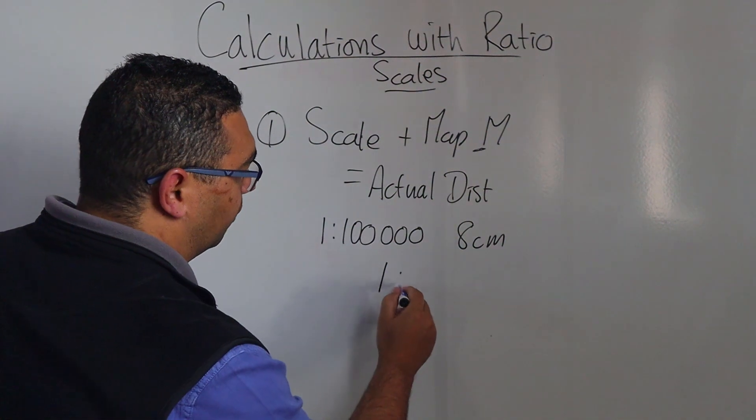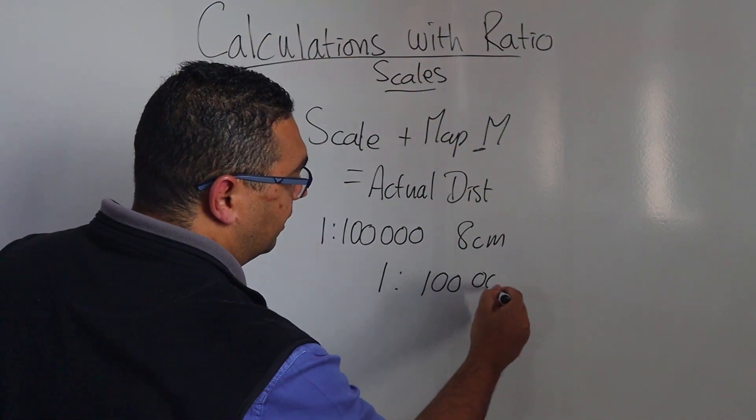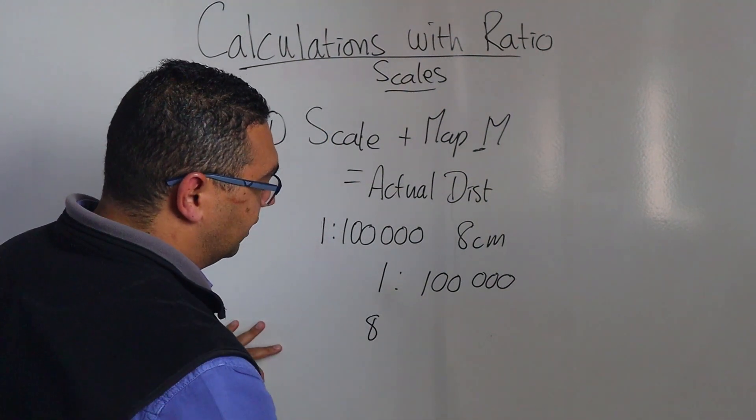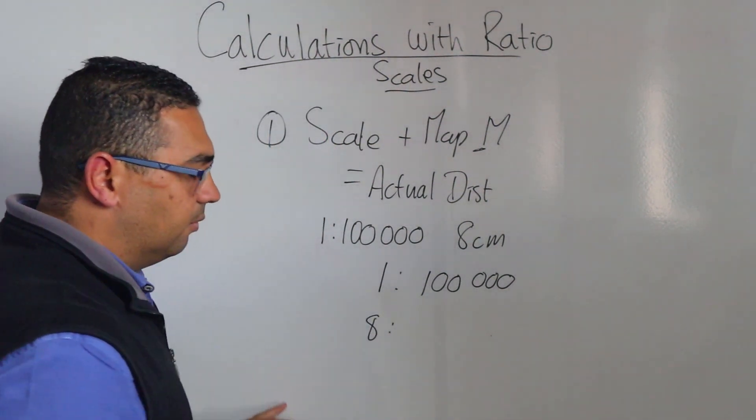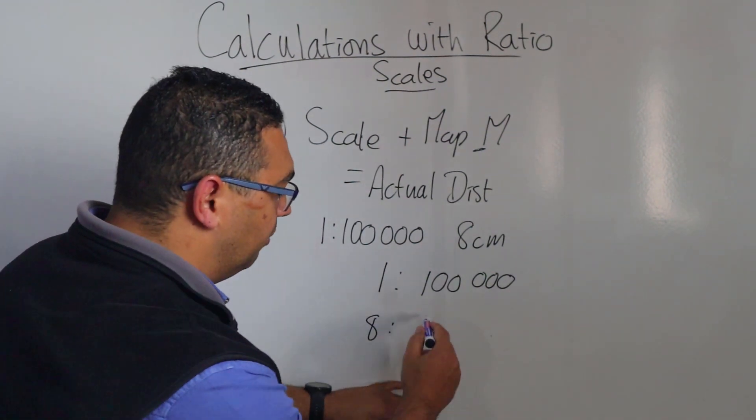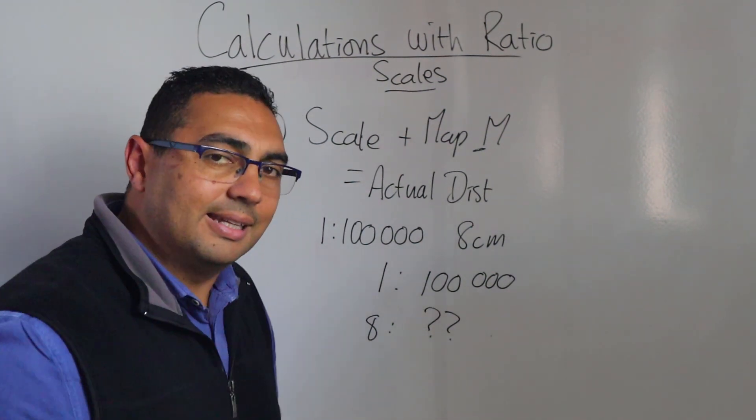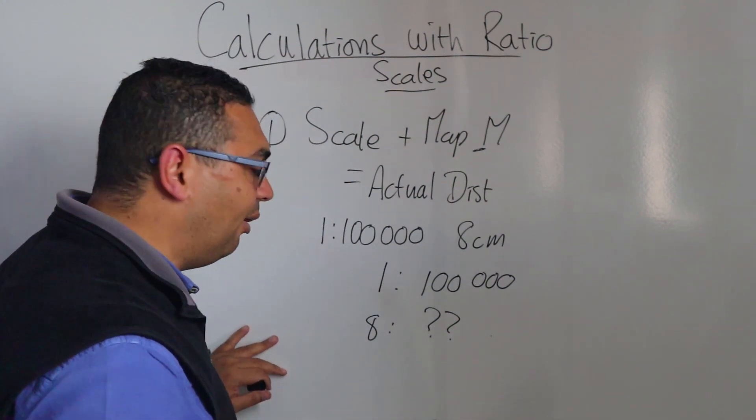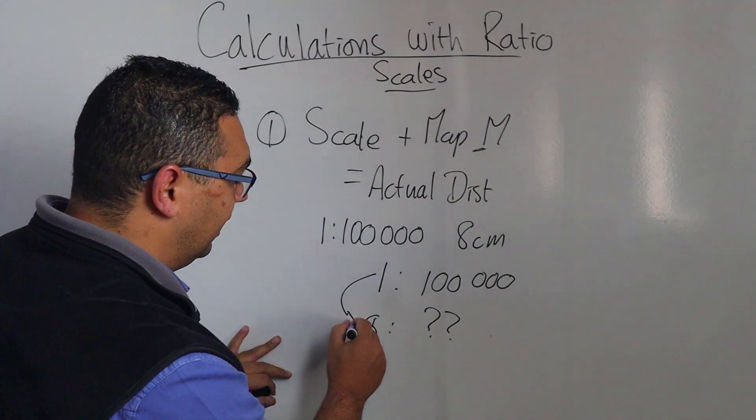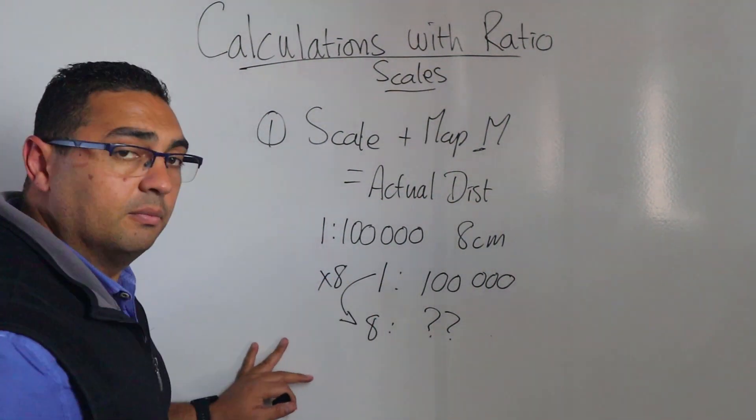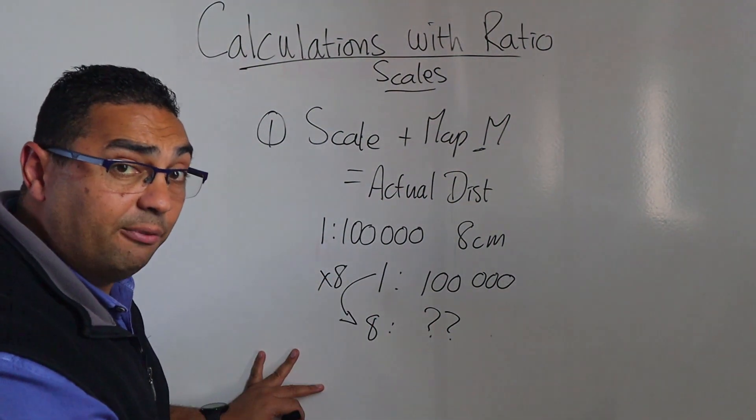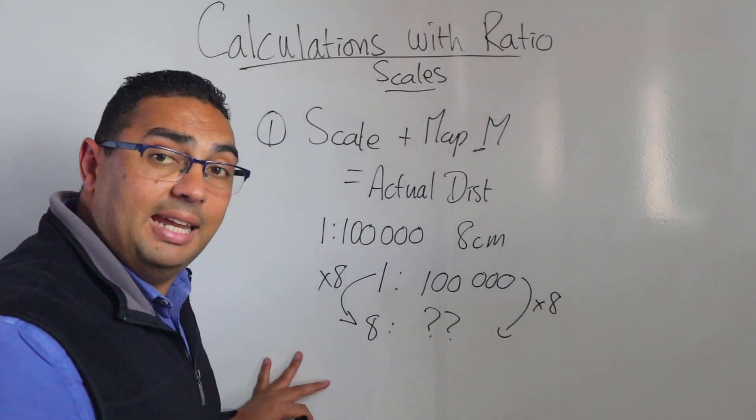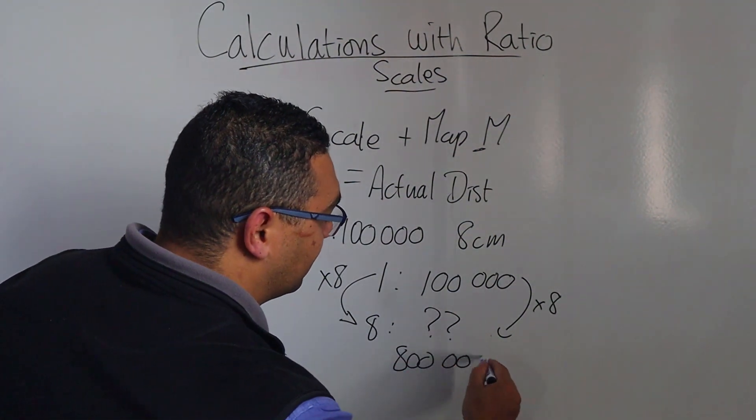Well we're going to take our scale 1 to 100,000, and then because I want the 8 centimeters I'm going to put it in like that in terms of my ratio, but I don't know what this is going to be. So I'm going to ask myself a simple question: well how did I get from 1 to 8? I multiplied by 8. What I do to the one side I have to do to the other side, and I'm now going to multiply by 8 and what I'm going to end up with is 800,000.